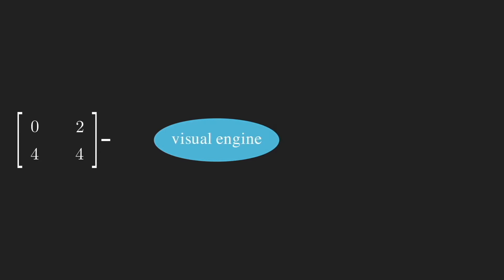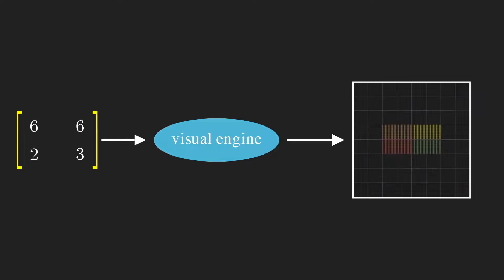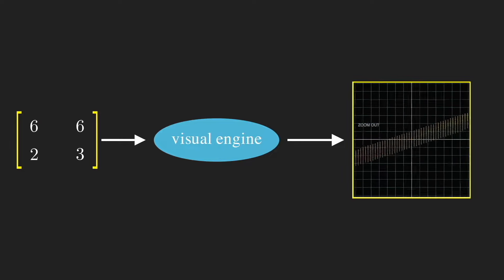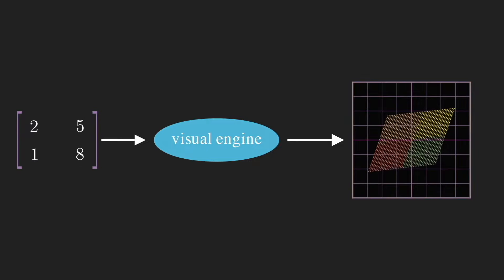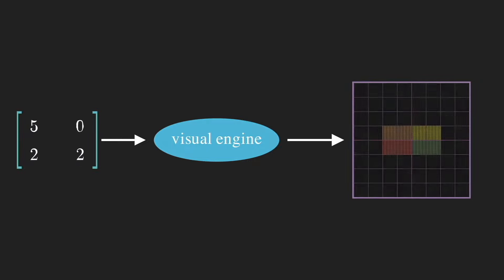We have essentially built an engine which creates a visualization for any 2×2 matrix. The very natural thing to do next is to just plug in a bunch of different matrices in there, and watch the transformation of the dots on the screen. And very soon, interesting patterns start to emerge.